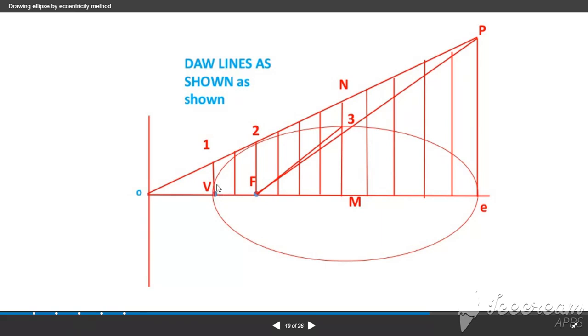Take the distance 1-1 dash, F as center, and cut this line. 2-2 dash as distance, F as center, and cut the line which intersects the two lines. Next, take 3-3 dash as distance, F as center, and cut the lines. Take 4-4 dash as distance, F as center, and cut the line which intersects the fourth line. Similarly draw the smooth curve.